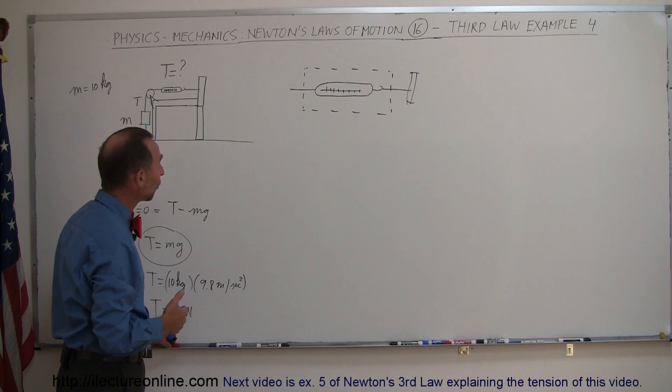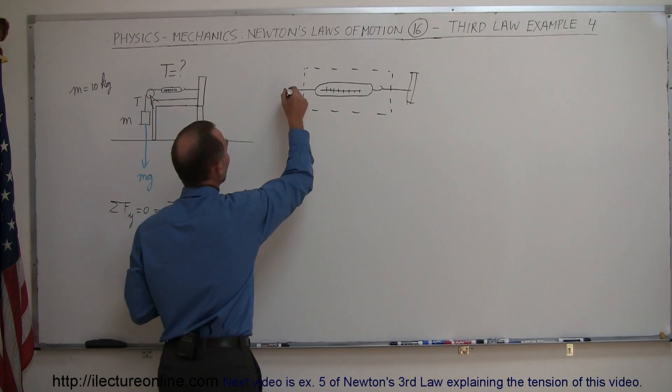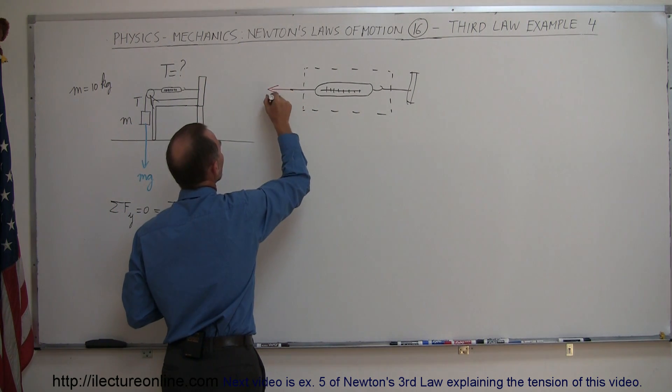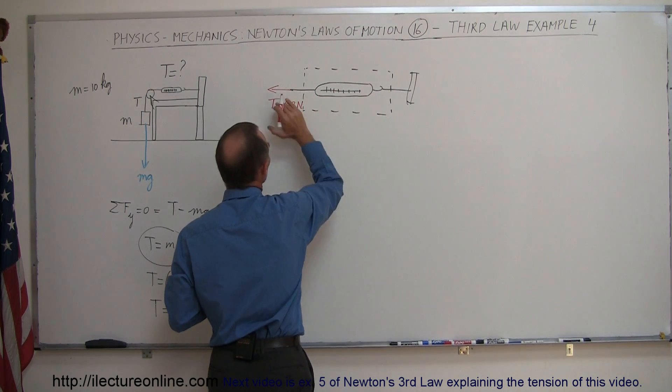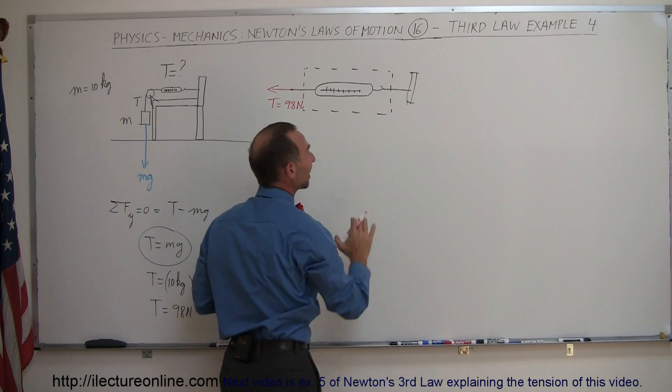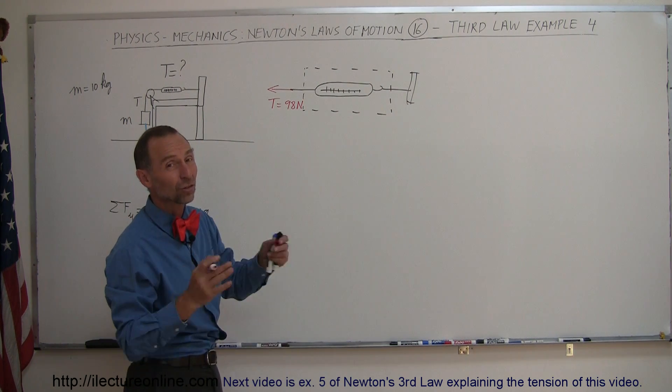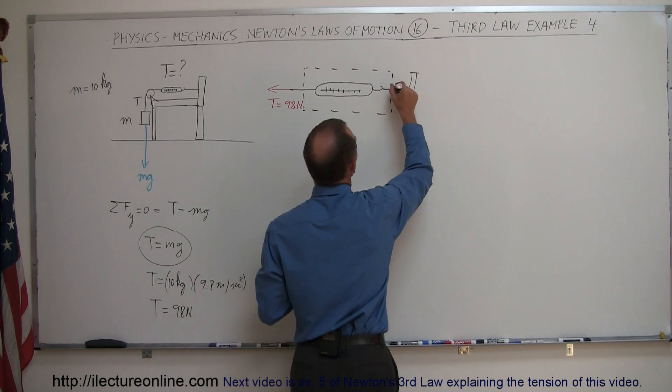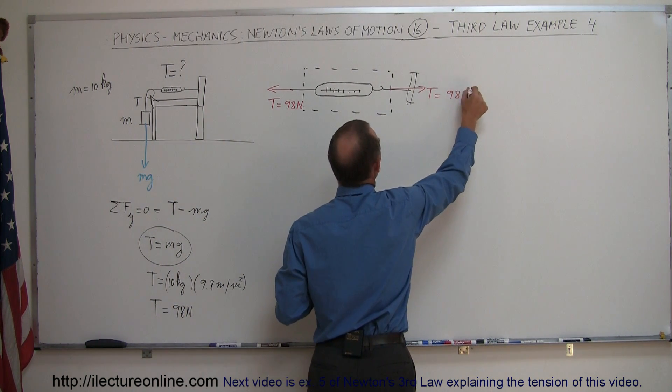Well, notice that we have a force pulling to the left equal to 98 newtons, so we have tension in this way, tension equals 98 newtons. And of course, if something is pulling this way with 98 newtons, we have to have something else on the other side, equal in magnitude, opposite direction, otherwise there's going to be an acceleration. So we should have a force right here, tension equals 98 newtons in the opposite direction.